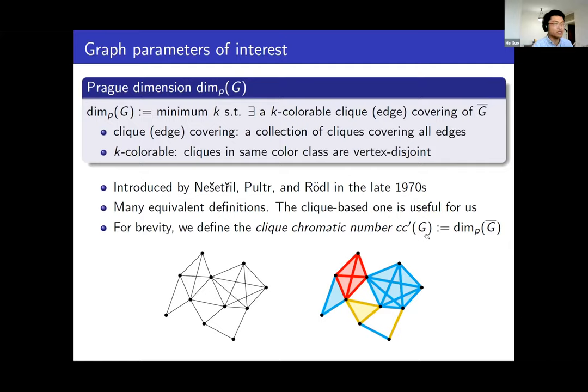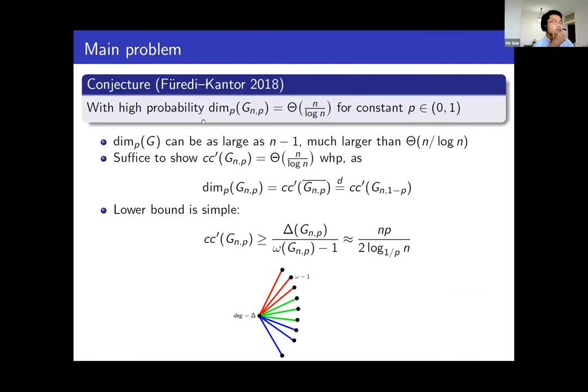Here is the main problem of our result. The main problem is a conjecture by Fuli and Kanter in 2018. They conjectured that with high probability, the proc dimension of the random graph G(n,p) has order of magnitude n over log n for all constant p.